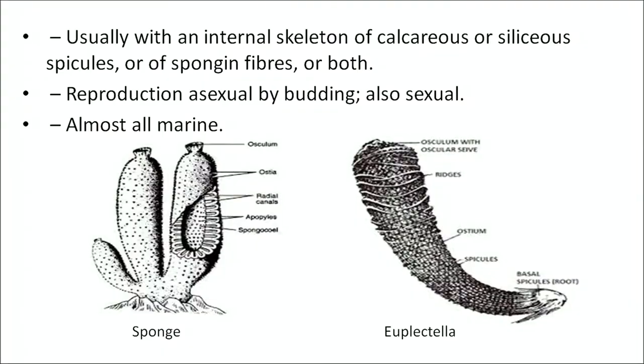Phylum Porifera, which includes sponges, has several characteristics. Its body has many pores, canals, or chambers through which water flows — this is called the canal system. It has a large aperture called the osculum at the upper end and its body encloses a large cavity called the spongocoel. It has no organs, movable parts, or appendages. Different kinds of cells perform different functions. Usually it has an internal skeleton of calcareous or siliceous spicules or of spongin fibers or both.